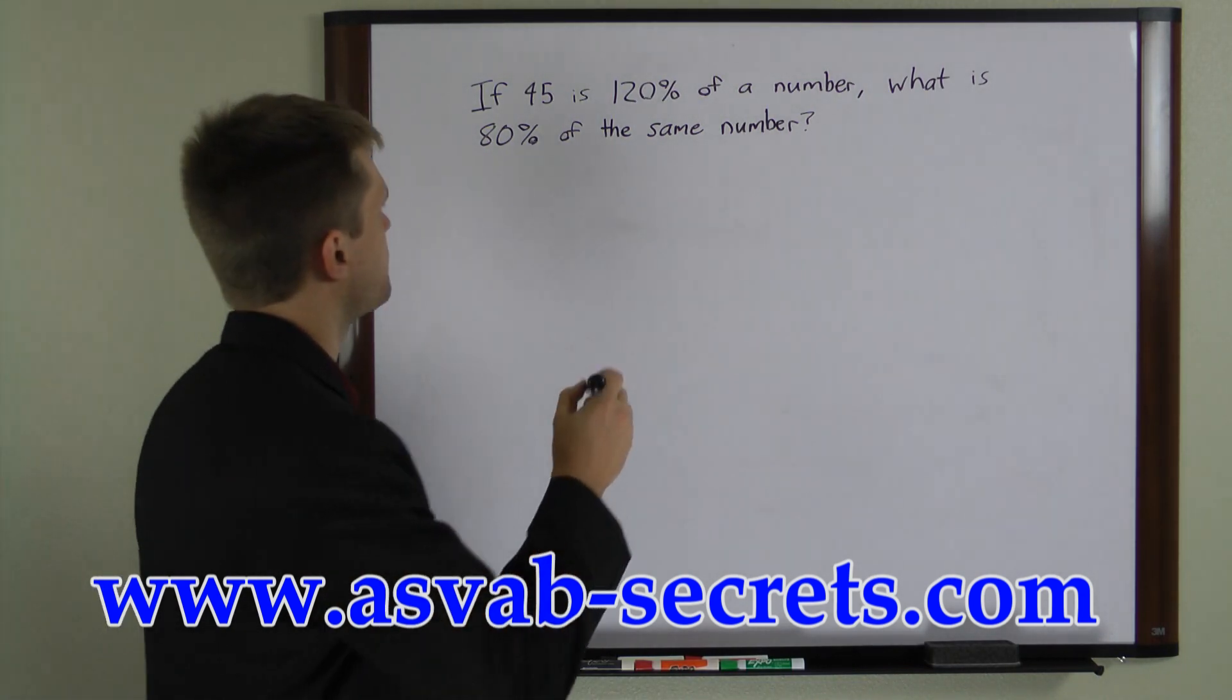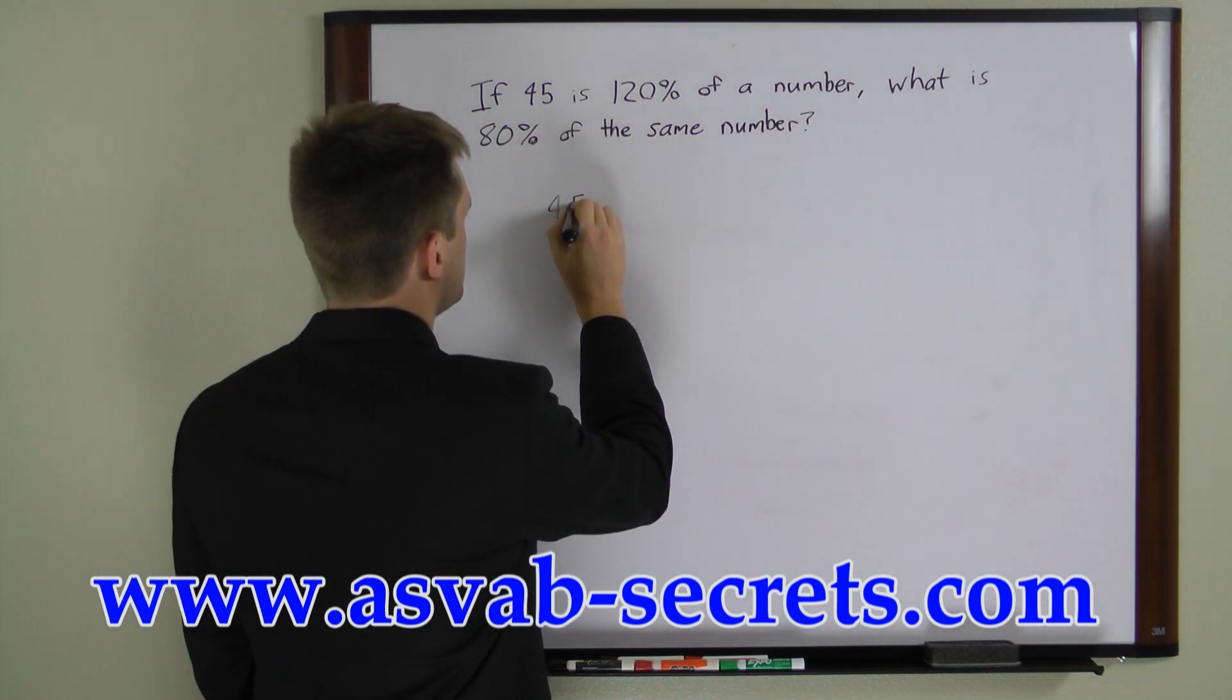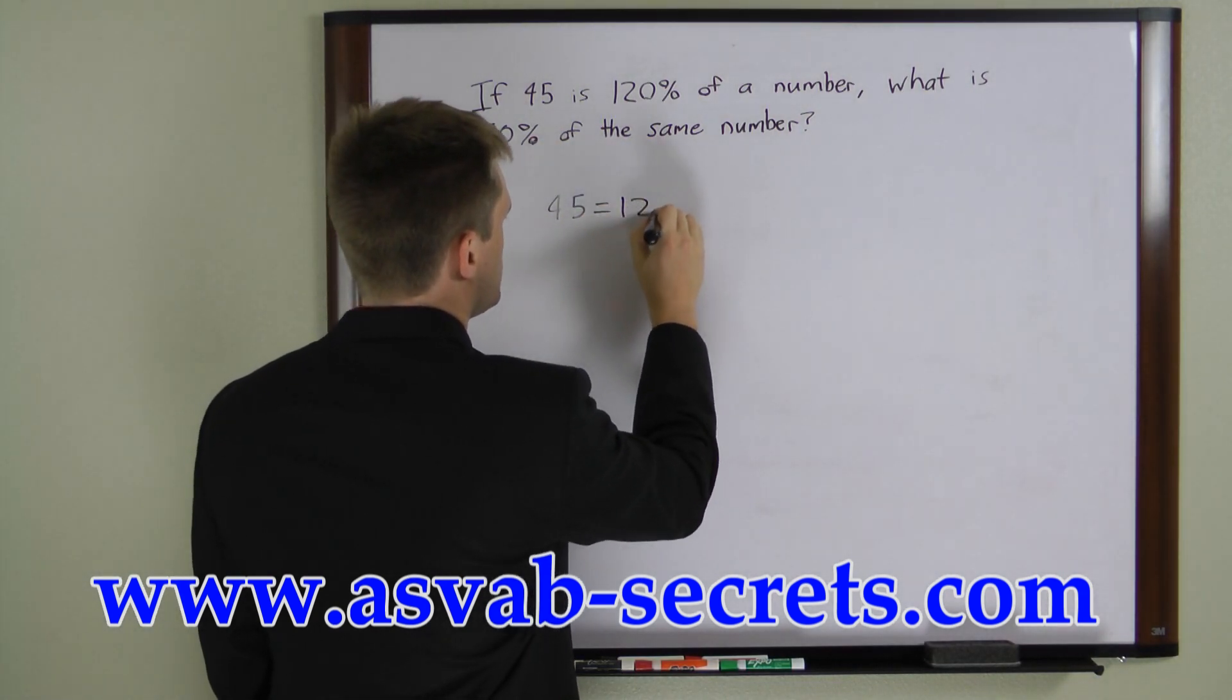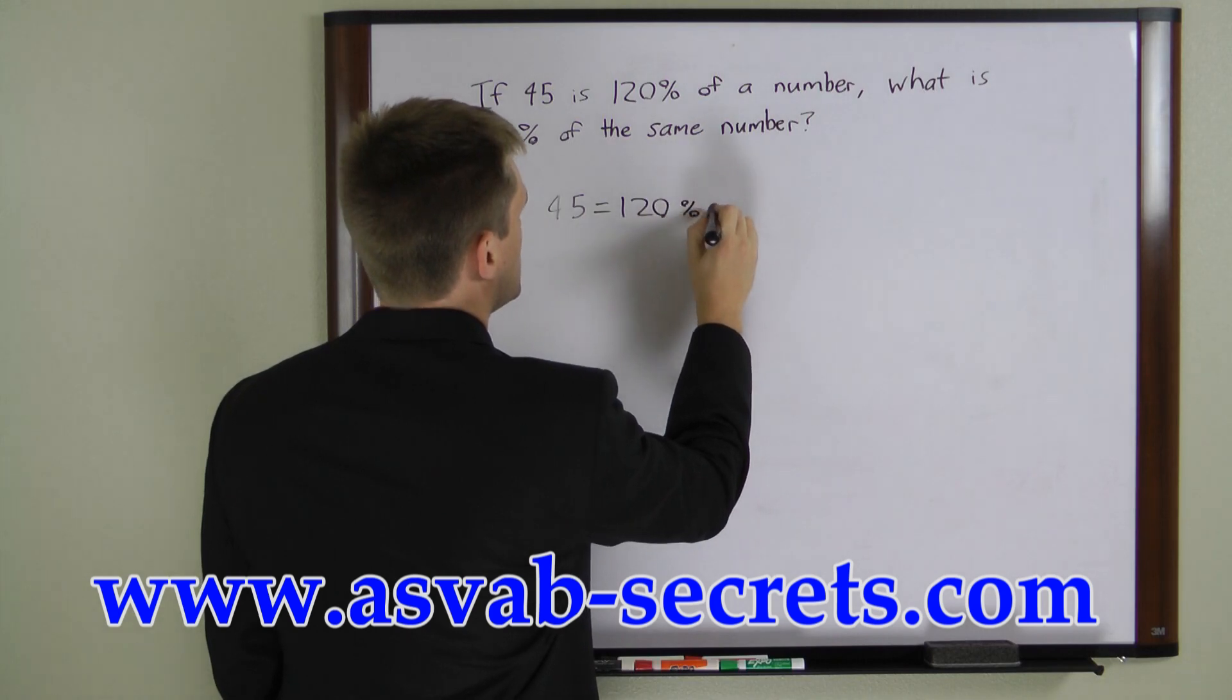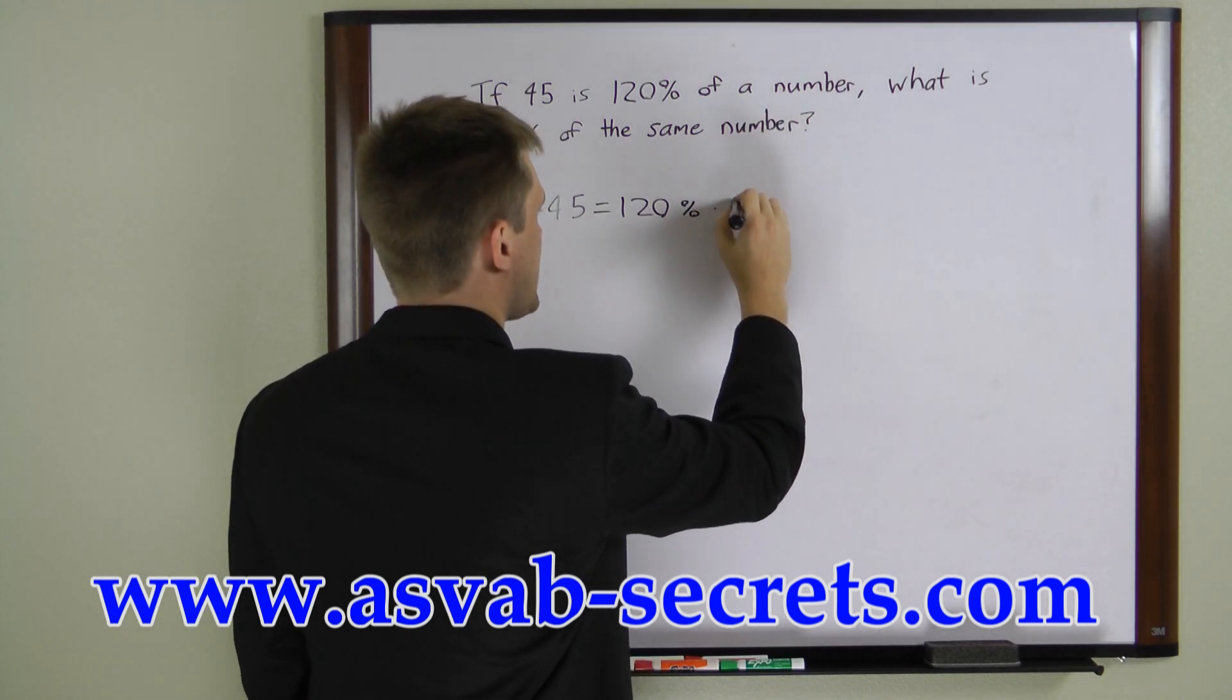Let's write the first one. First we have 45 equals 120% times a number. We'll call that number x.